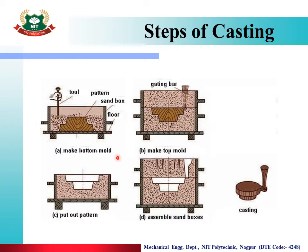To make the bottom mold: cope is the top portion and drag is the bottom portion. So the top is the cope and underneath is the drag. First, we fill sand into the drag. We place sand below and then fit sand in the middle tightly.